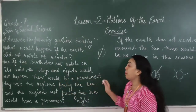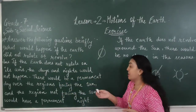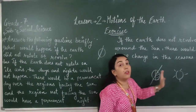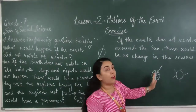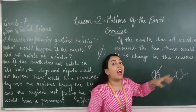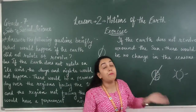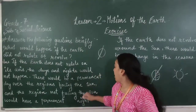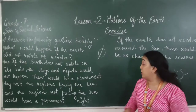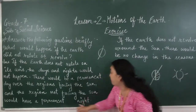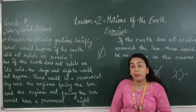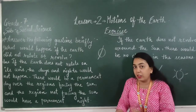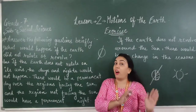The changes in day and night will not occur. There would be a permanent day over the regions facing the sun. The part of the earth which is facing the sun will have day permanently. And the areas which are not facing the sun would have permanent night.